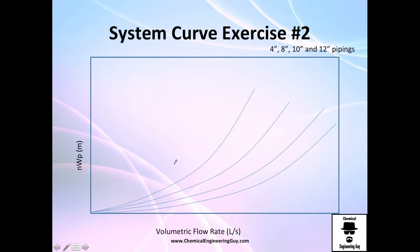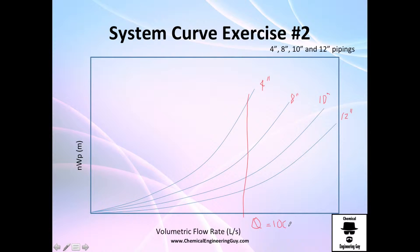We can continue doing this — for example, four inch, eight inch, ten inch pipe, and twelve inch pipe. For the same volumetric flow rate Q, let's say 100 liters per second, you have different system heads just because you have different pipelines. That's very interesting.